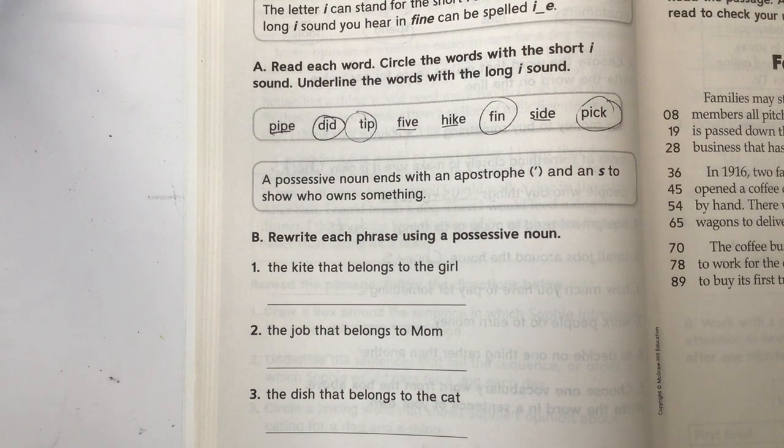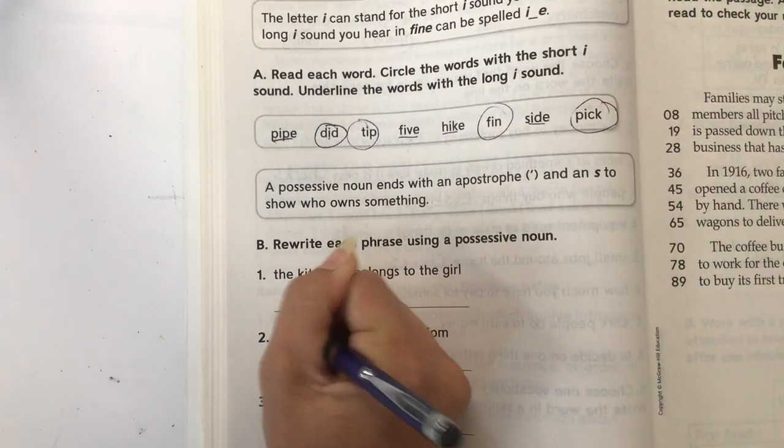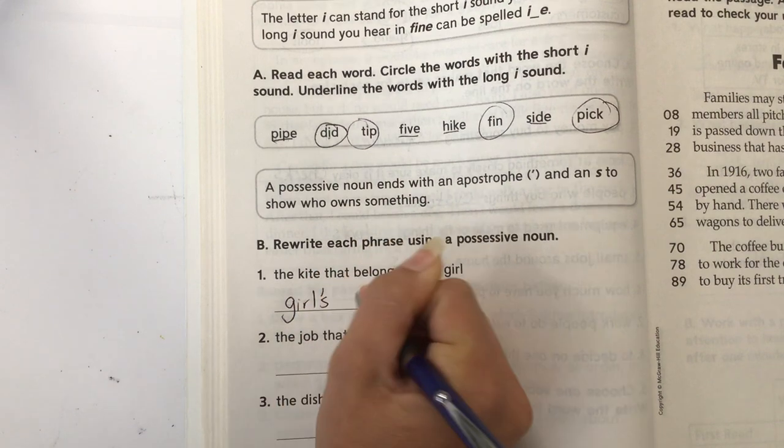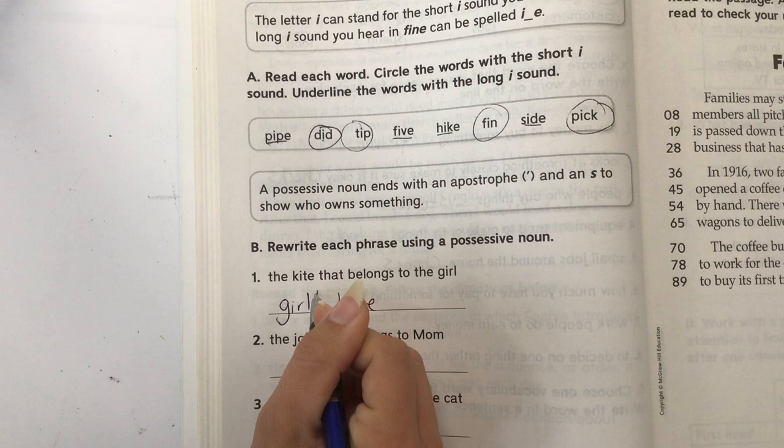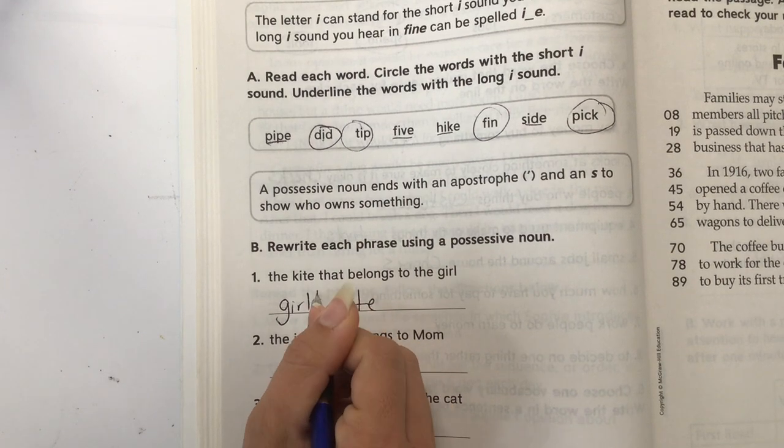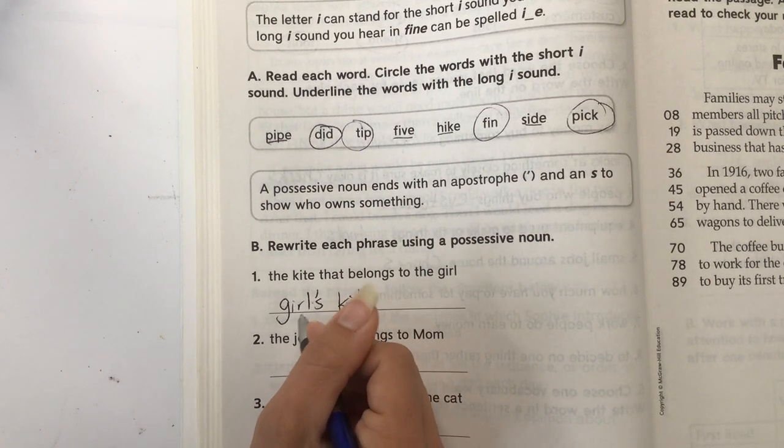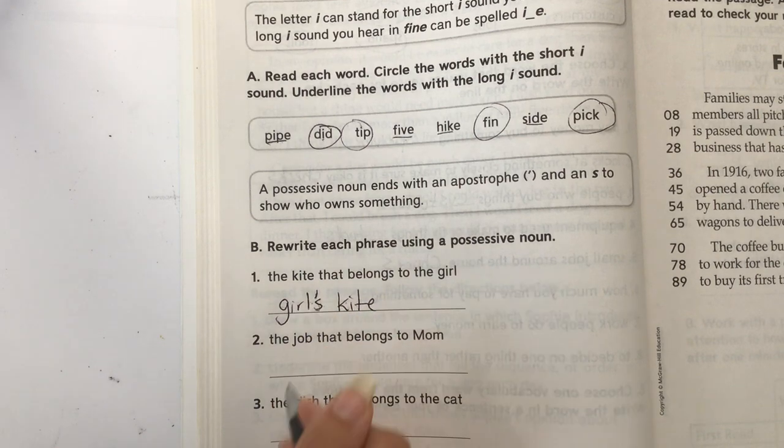The kite that belongs to the girl. So if the girl has a kite, it is the girl's kite. It's one girl. Apostrophe S means she owns the kite that belongs to her. Not two girls. It's one girl because the apostrophe S doesn't mean plural.